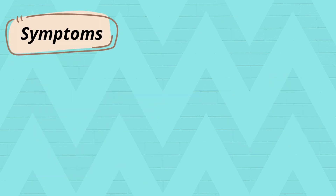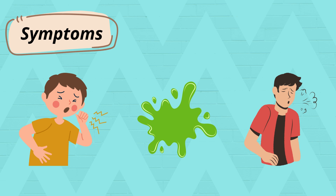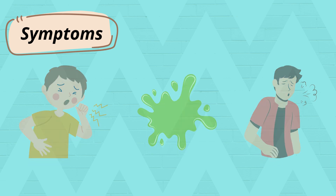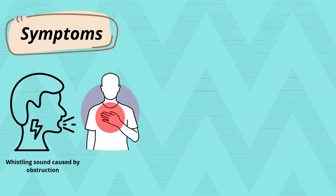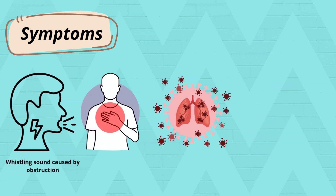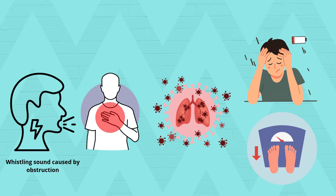Most patients report a chronic cough, often with mucus and progressive shortness of breath, especially during physical activity. Other symptoms include wheezing, chest tightness, frequent respiratory infections, and eventually fatigue and weight loss. These symptoms develop slowly over years and are often ignored until significant lung function is lost.